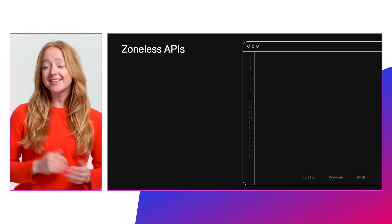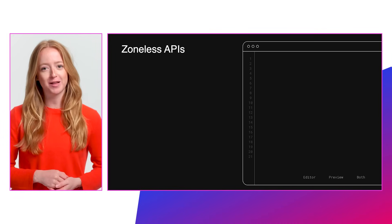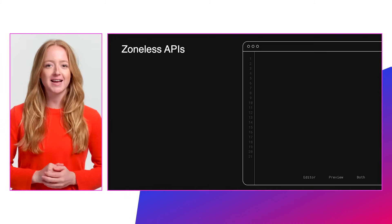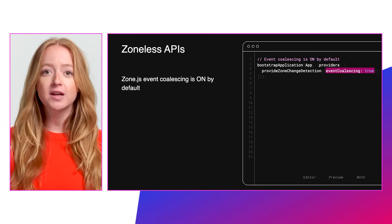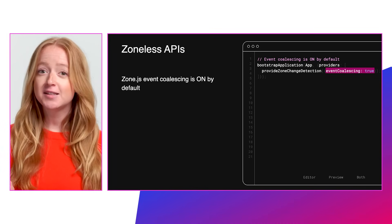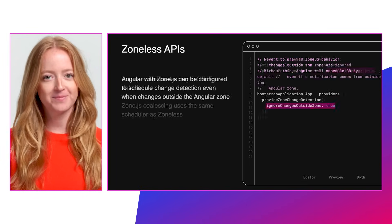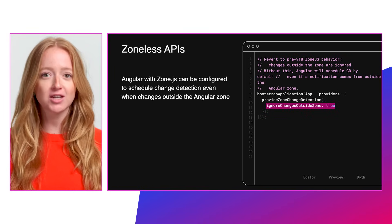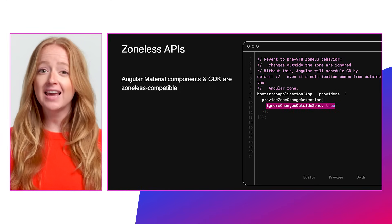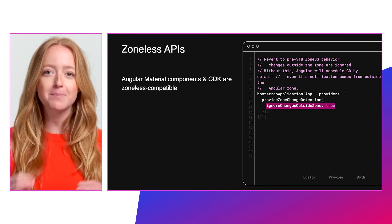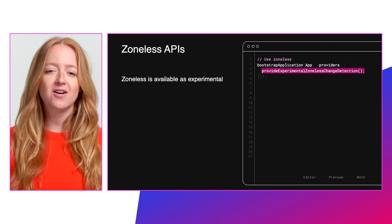But we're not stopping there. V18 includes an experimental preview of zoneless Angular. Alex shared how we're thinking about the future developer experience of zoneless Angular, and why our eventual goal is to make zone.js fully optional. V18 includes some incremental improvements that allow you to explore removing zones in your code starting today. Zone event coalescing is on by default in V18, and zone coalescing uses the same scheduler as zoneless. Angular with zone.js can be configured to schedule change detection even when changes happen outside the Angular zone. Angular Material components and the CDK are also zoneless compatible. To learn more about experimental zoneless support, head to our guides on angular.dev.